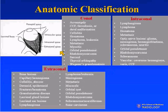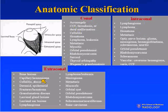Briefly on the anatomic classification of orbital lesions: retrobulbar masses can be divided into the intraconal space and the extraconal space, and there are many lesions which can occur in the extraconal region — as illustrated by the examples just shown.